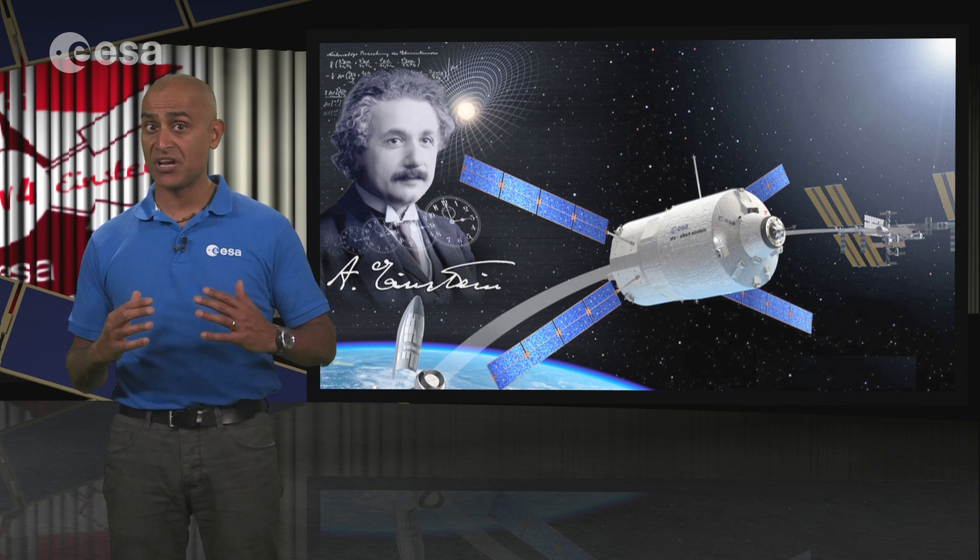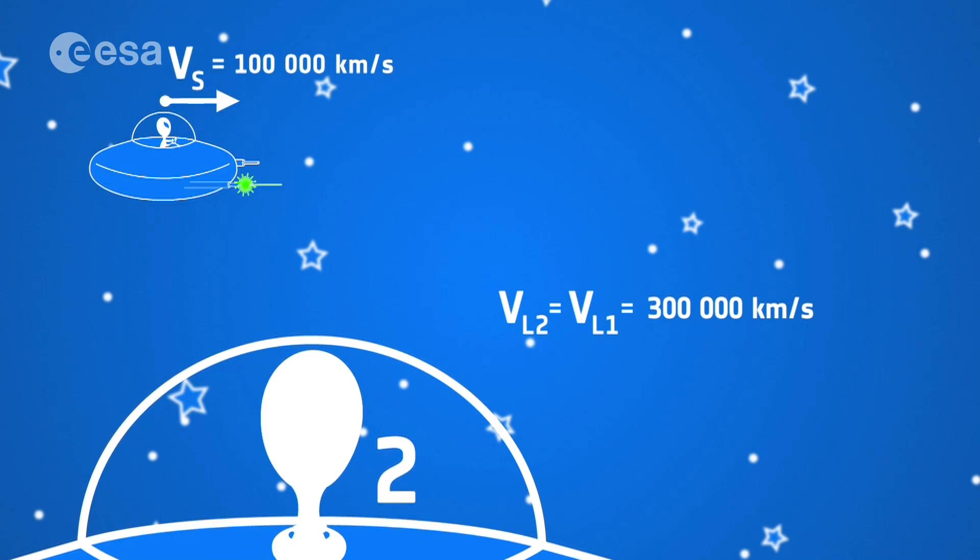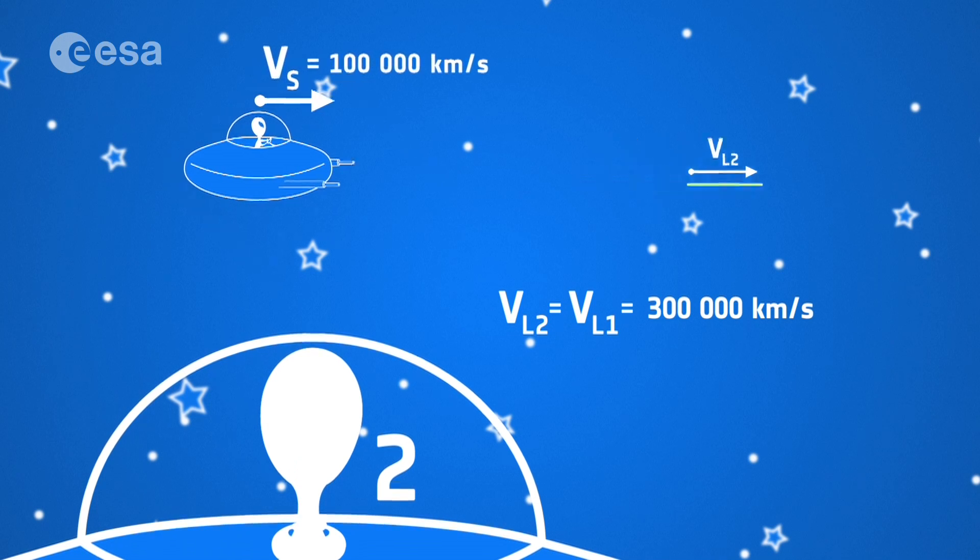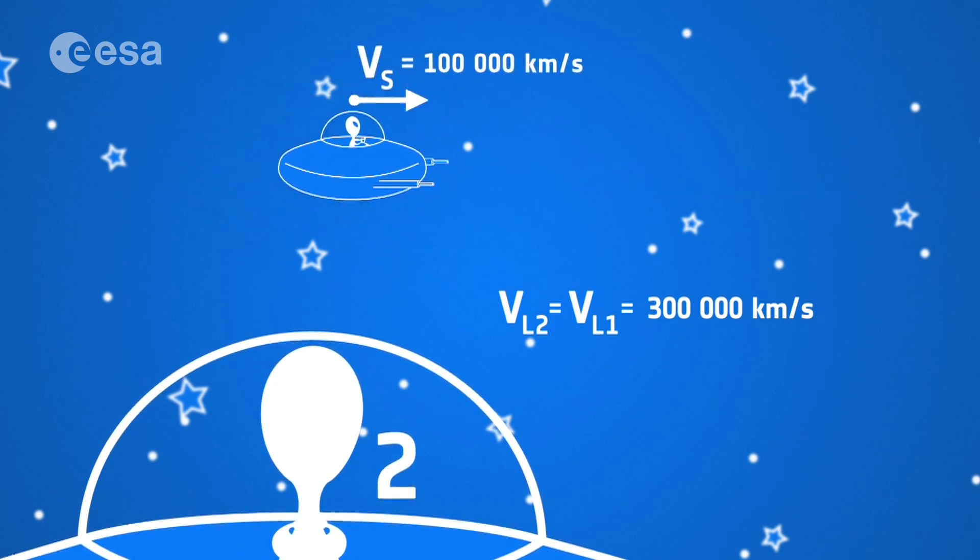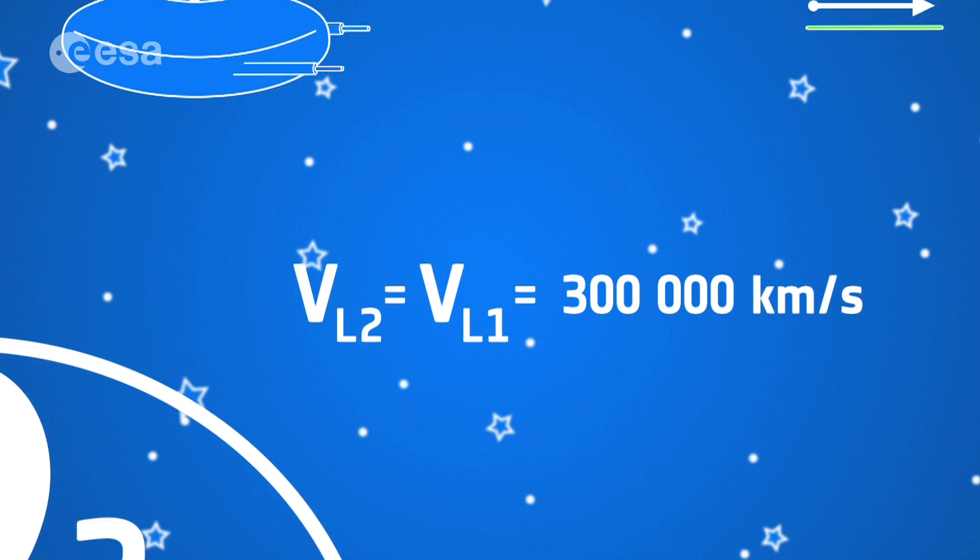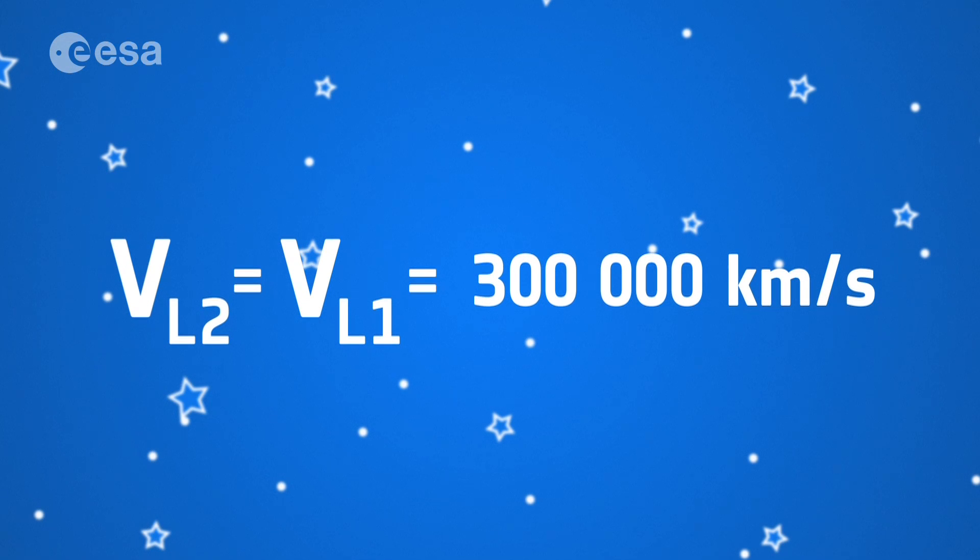In fact, both observers measure the speed of light as being the same 300,000 kilometers per second, regardless of their relative velocity. The speed of light in the universe is the same for all observers.